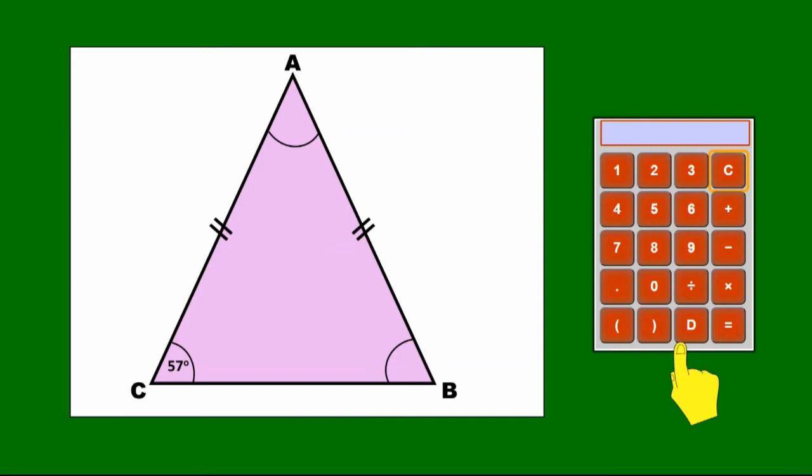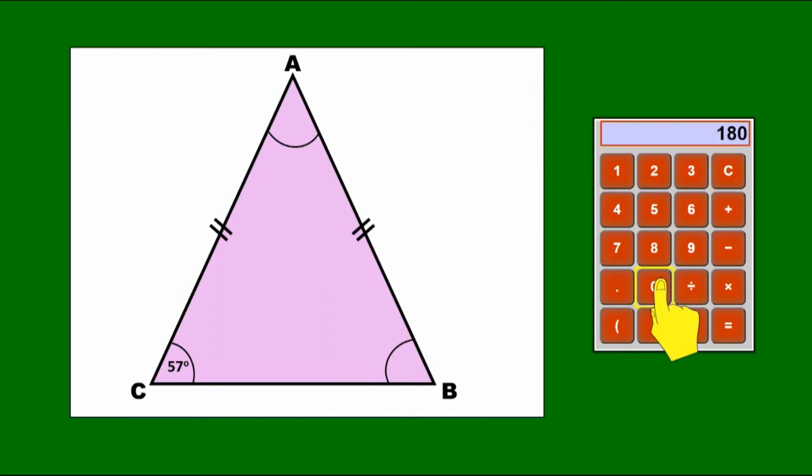So let's say we have to work out the value of the angle at A. Well, we do it in the same way. 180 degrees minus the 57 that's at the bottom left, but because there are two of those, we need to take away two 57s to get the answer 66.